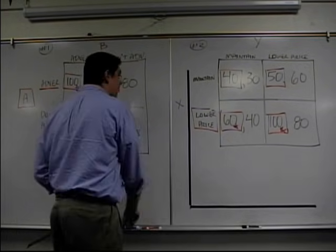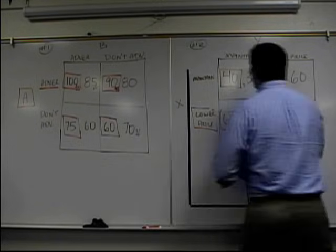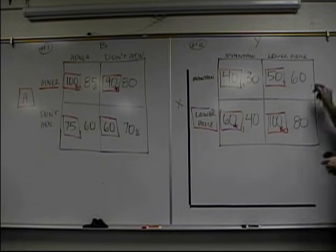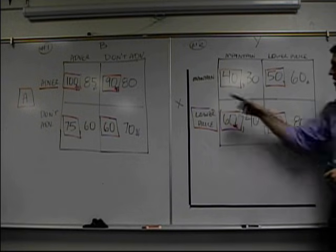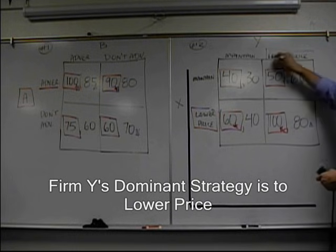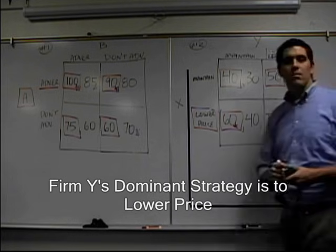And over here, for Y, let's take a look. Good. If X decides to maintain, which one's better? 30 or 60? All right. 60 is a better one. And if X decides to go low, 40 or 80? 80. It looks like lower the price is their dominant strategy. That's the concept. Until next time.